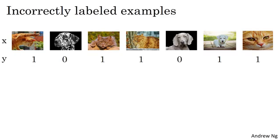In the cat classification problem, y equals 1 for cats and 0 for non-cats. So let's say you're looking through some data and that's a cat, that's not a cat, that's a cat, that's a cat, that's not a cat, that's a cat. No, wait, that's actually not a cat. So this is an example with an incorrect label.